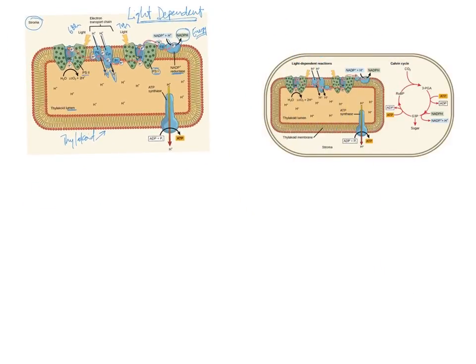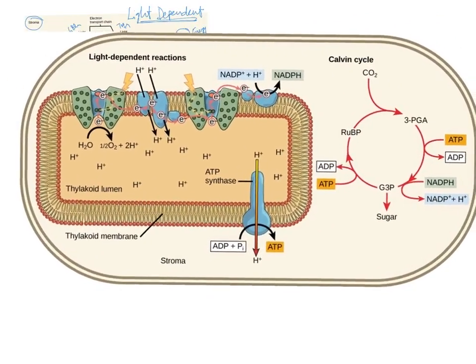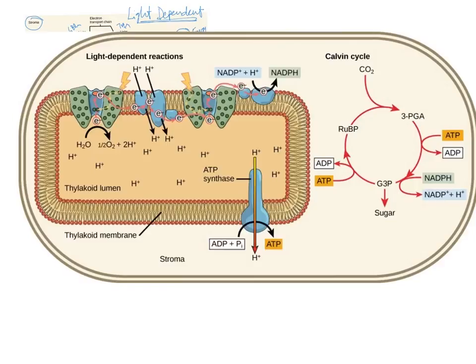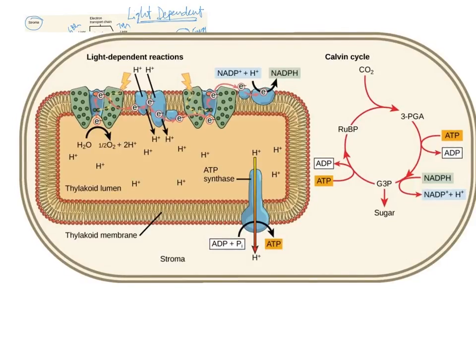Here's the bigger picture. We've got our light-dependent reactions - this is here on the left, what we just looked at. Then the Calvin cycle - this is step two in producing the glucose, because plants need glucose to use in respiration. Step one gives them some ATP, this can be used for cellular processes, but the main idea is it needs glucose to break down in the mitochondria. The Calvin cycle is what does that.